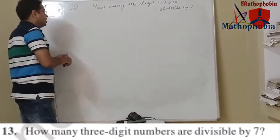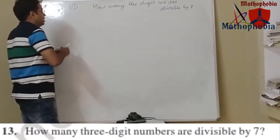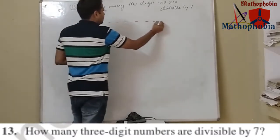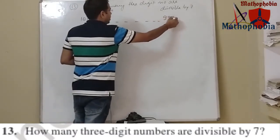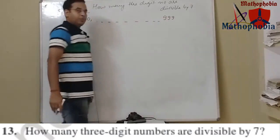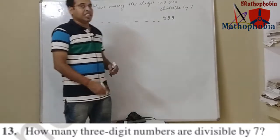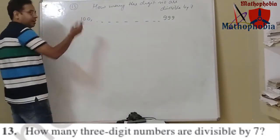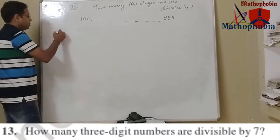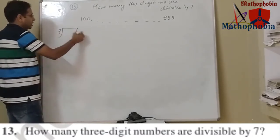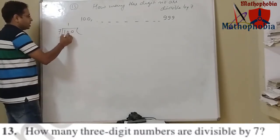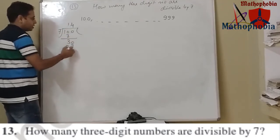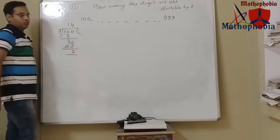The first three-digit number is 100, and the last three-digit number is 999. But we need to find the numbers divisible by 7. Let us divide 100 by 7 to check whether it is divisible or not. We get a remainder of 2.